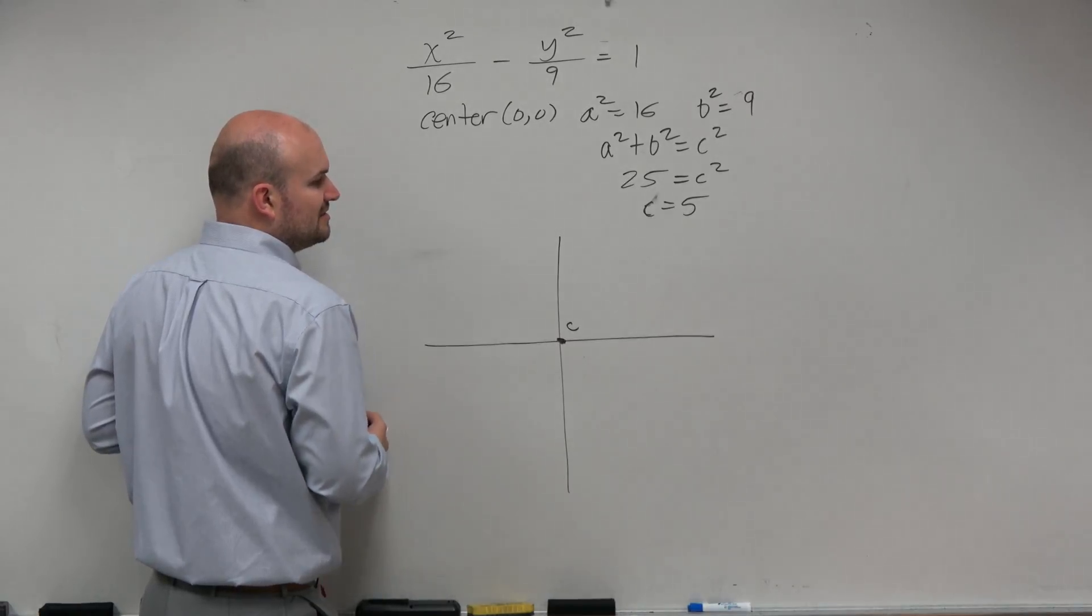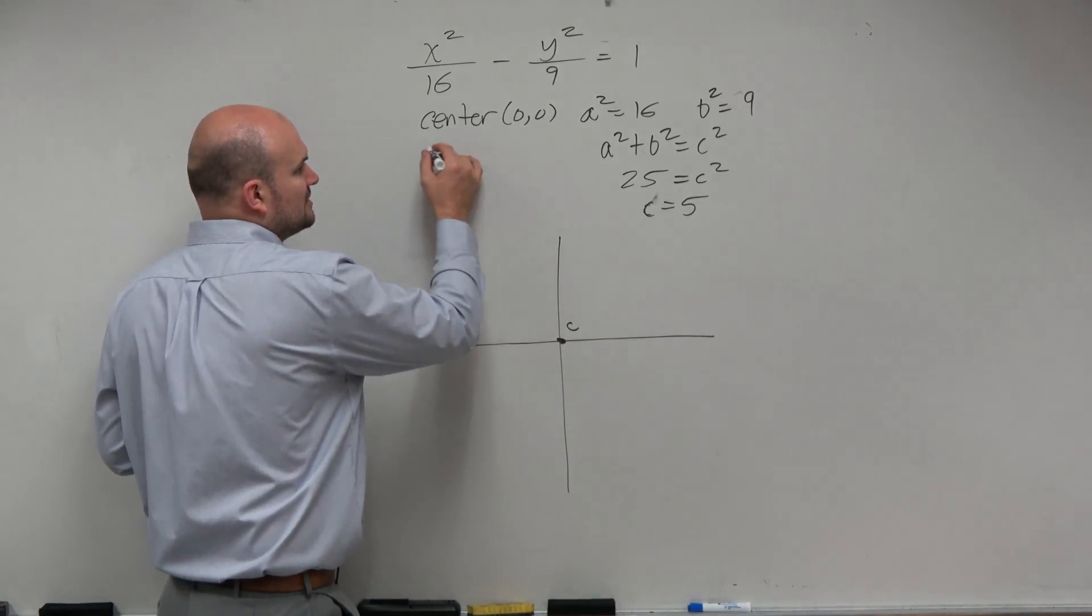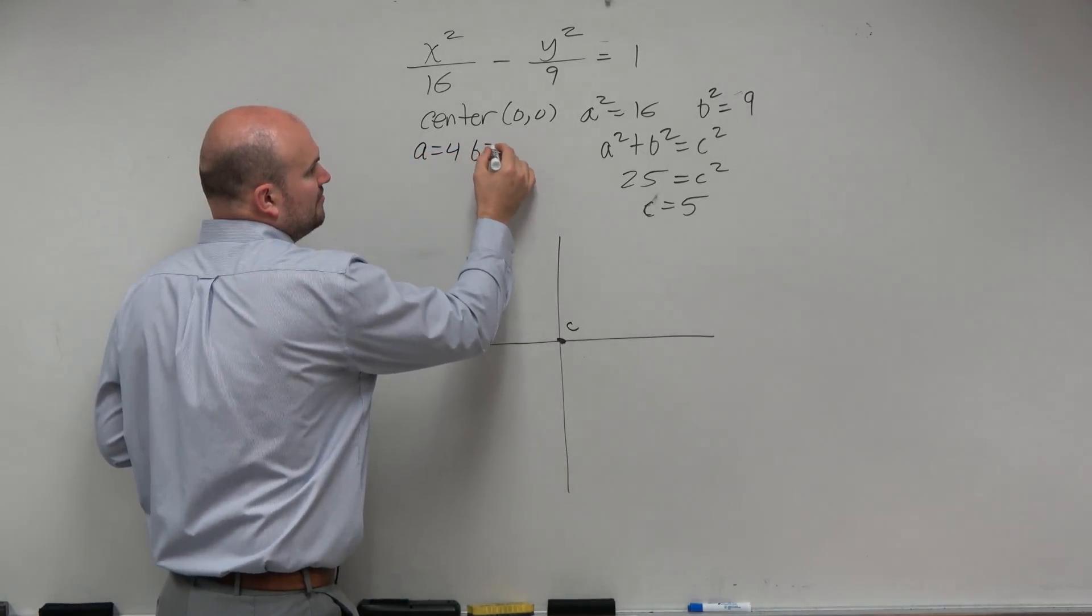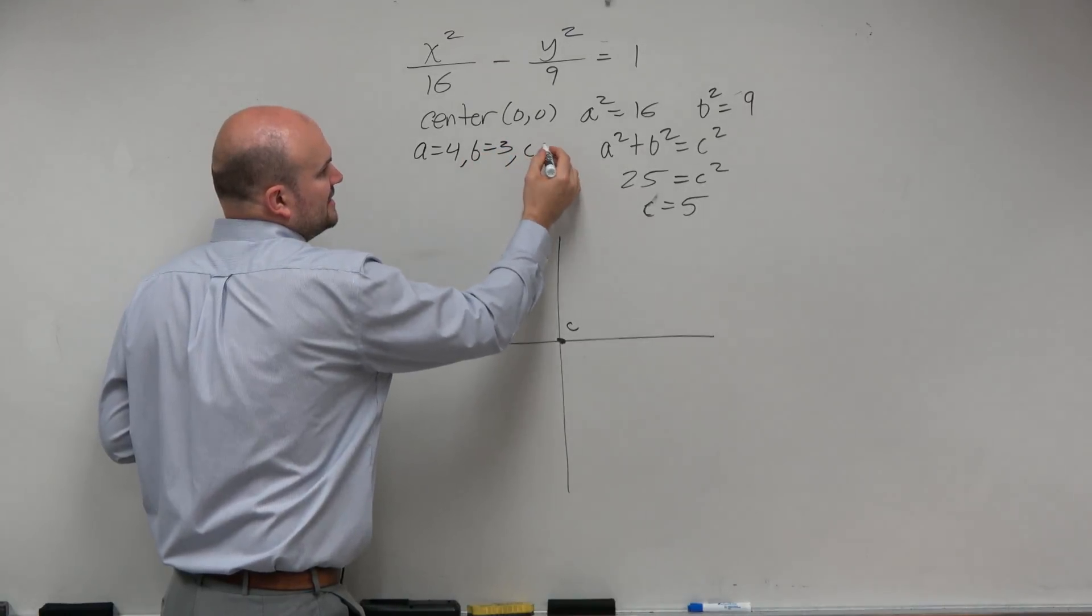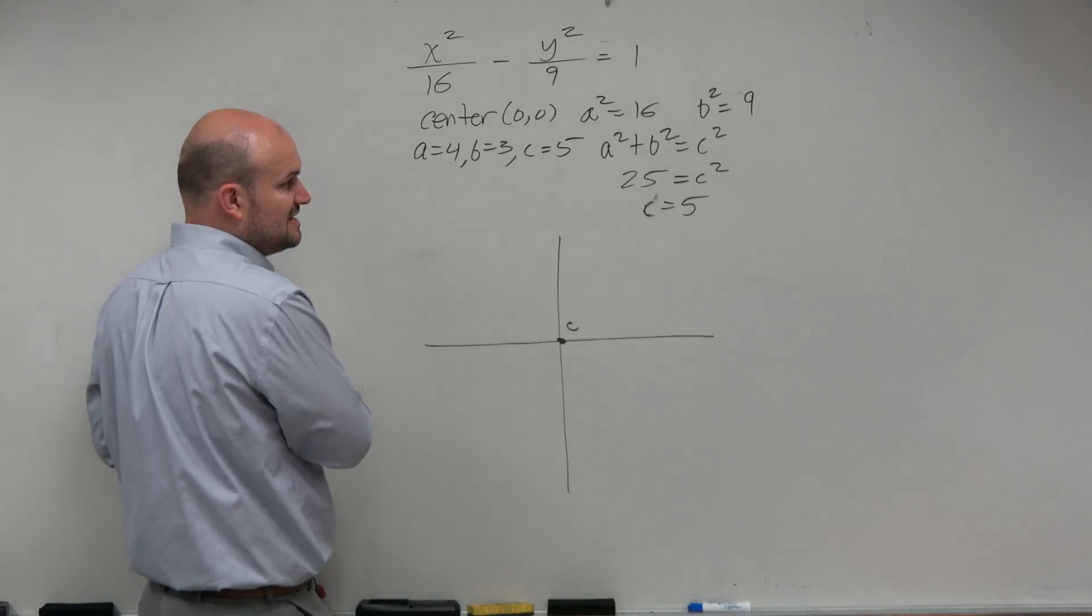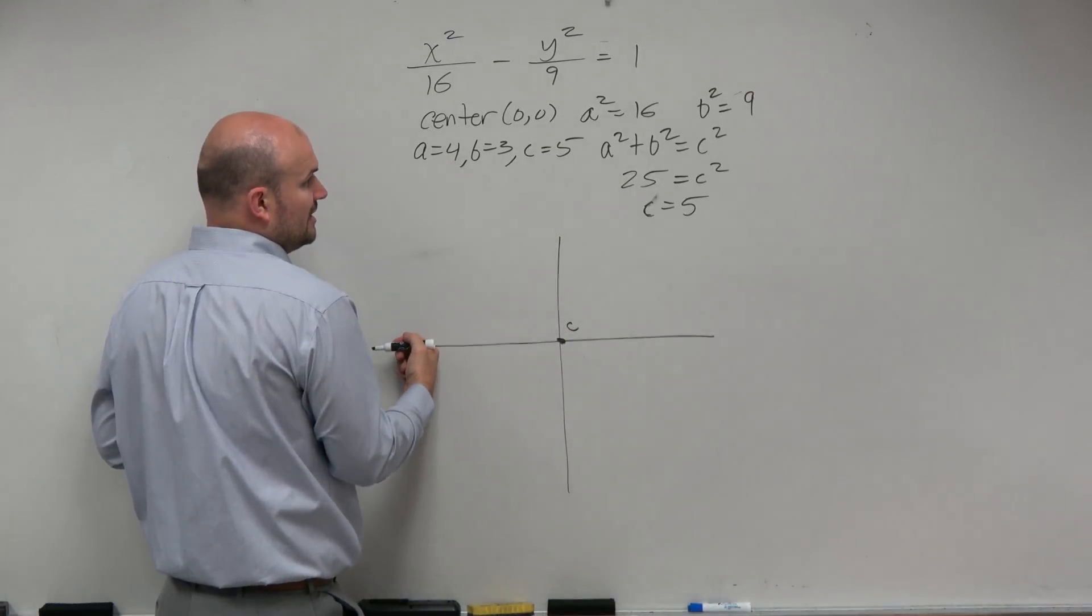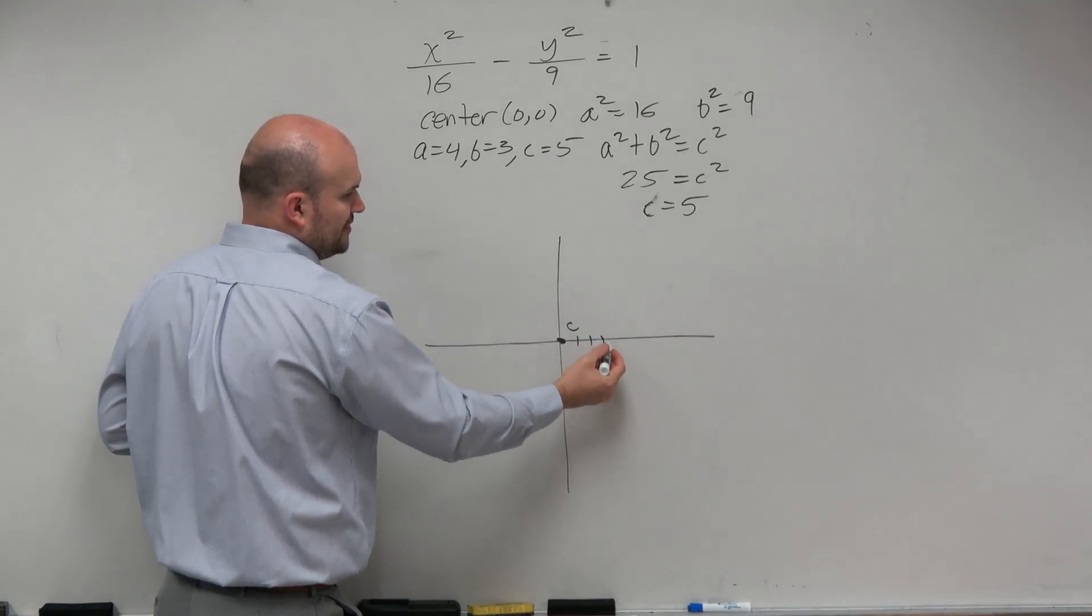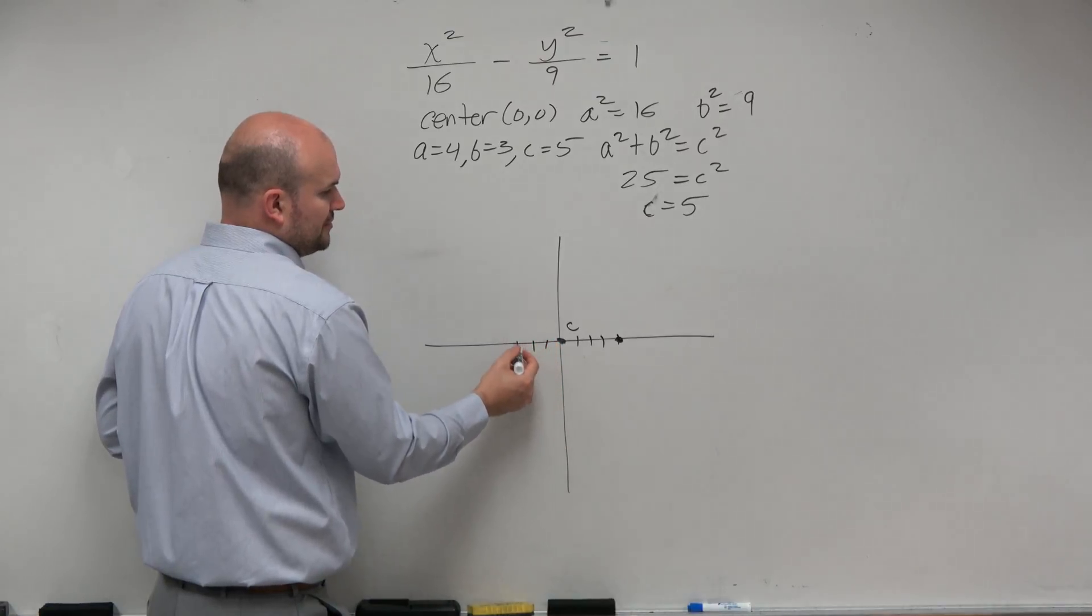So again, the distance from a is 4, b is 3, c is 5. So remember, the distance from my center to my vertices is a. That means I'm just going to go to the right and left four units. 1, 2, 3, 4. 1, 2, 3, 4.